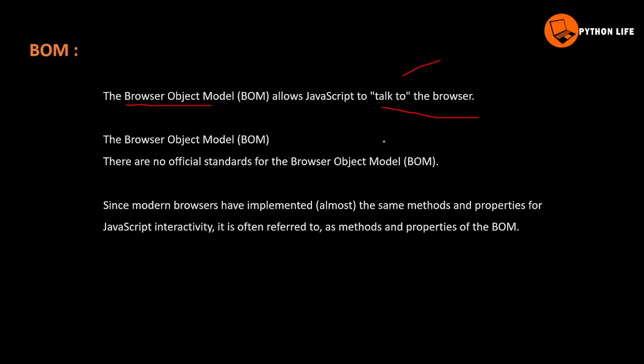HTML and JavaScript interact through the DOM, so JavaScript's interaction with HTML is handled by the DOM. The browser's interaction with JavaScript is handled by the BOM — Browser Object Model. BOM means browser properties and windows are available; DOM means HTML elements and objects are available. That is the difference between BOM and DOM.